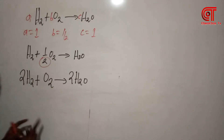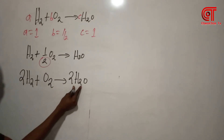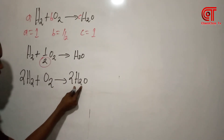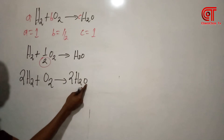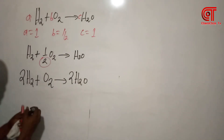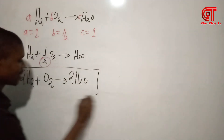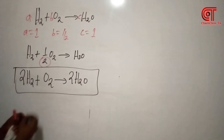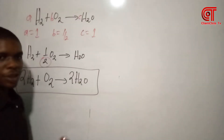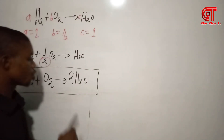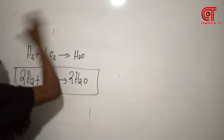You can see that the equation is now balanced: we have 4 hydrogen on the left and 4 hydrogen on the right, and 2 oxygen on each side. This is the balanced chemical equation. We are going to do another one for proper understanding.